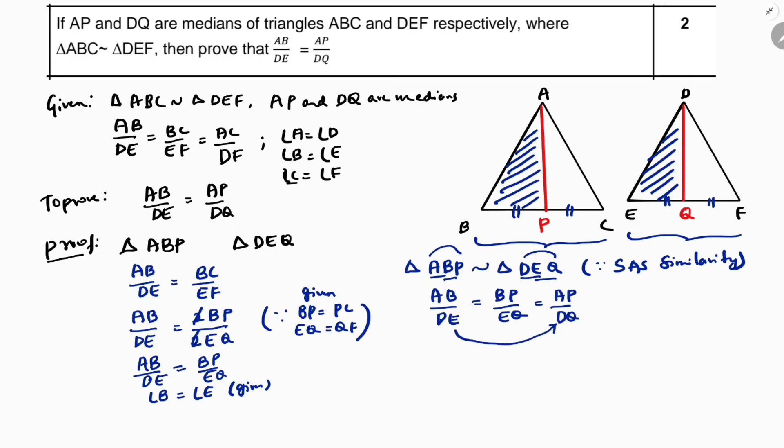But they want only this one. So, write again, AB by DE equals AP by DQ.